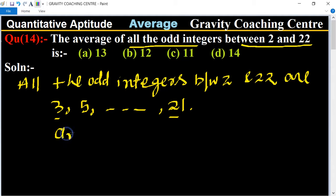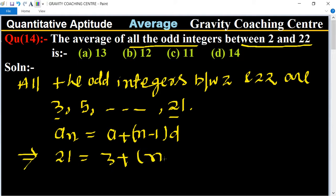use the formula of AP: aₙ = a + (n-1)d. This implies that the nth term is 21 and first term equals 3 plus (n-1) times the